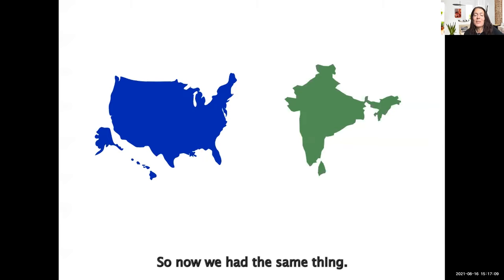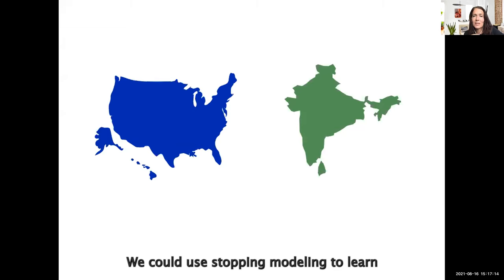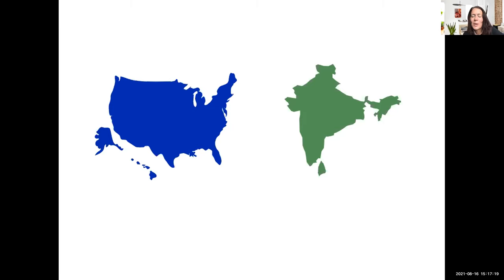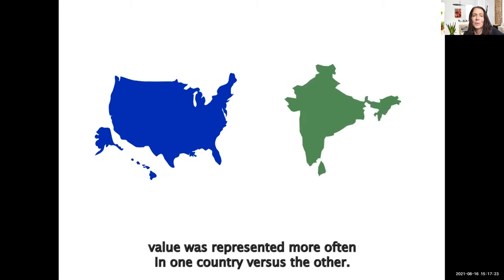We had data from the US and data from India. We could use topic modeling to learn all the values expressed in these two countries. The question we wanted to explore was to what extent one value was represented more often in one country versus the other.